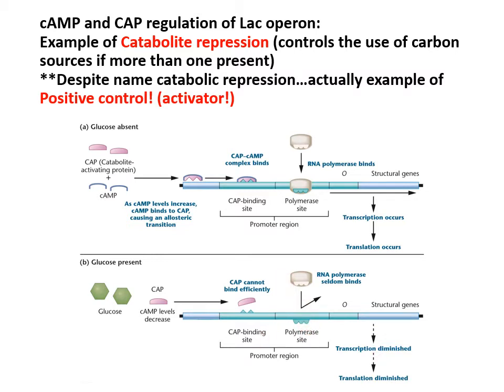In the absence of glucose, cAMP complexes with CAP so that CAP can fit perfectly on the promoter. When CAP is present, the polymerase binds beautifully and you get transcription. If, however, glucose is present, that inhibits the enzyme that makes cAMP, so cAMP can't complex with CAP, and without CAP binding to the promoter region there's nothing to help the polymerase properly bind. If the polymerase doesn't bind, then you don't get proper transcription.